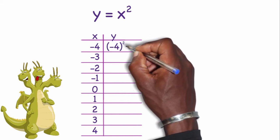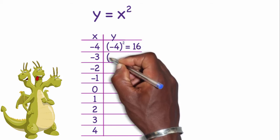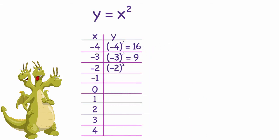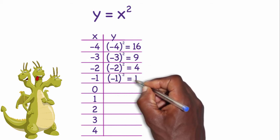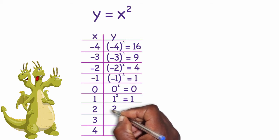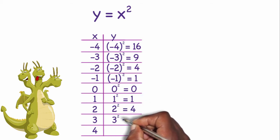So negative 4 in parentheses squared is 16. Negative 3 in parentheses squared is 9. Negative 2 squared is 4. Negative 1 squared is 1. Zero squared is 0. 1 squared is 1. 2 squared is 4. 3 squared is 9. 4 squared is 16.